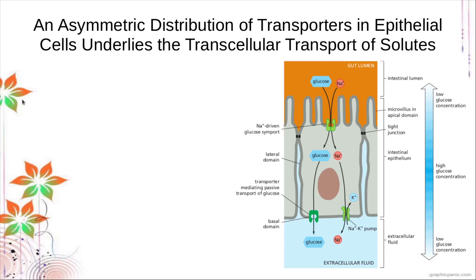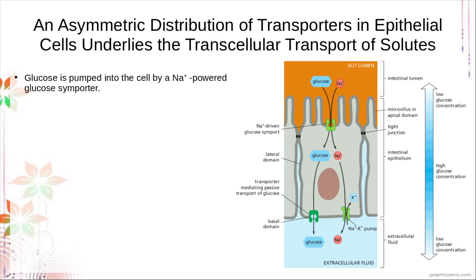Aside from the symport mechanism, the distribution of transporters in cells is one of the ways cells control what passes through the lipid bilayer. For example, in epithelial cells in our gut and intestines, glucose is pumped into the cell by the sodium-powered glucose importer — a coupled transport. The glucose from the food we eat is imported inside the cell powered by the sodium electrochemical gradient. The main function of these epithelial cells is to absorb glucose from the digestive tract and pass it to the bloodstream.